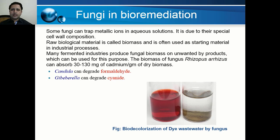Some fungi can trap metallic ions in aqueous solutions due to their special cell wall composition. Raw biological material called biomass is often used as a starting material in industrial processes. Different fungi can bioabsorb various pollutants like dye wastewater and heavy metals. Fermented industries produce fungal biomass that can be grown on bioproducts and used for this purpose. For example, the biomass of Rhizopus arrhizus can absorb 30 to 130 mg of cadmium per gram of dry biomass. Candida can degrade formaldehyde or treat formaldehyde wastewater, and cyanide water can be treated by Gibberella species of fungus.